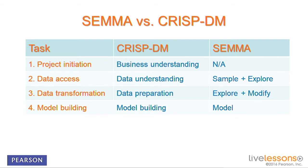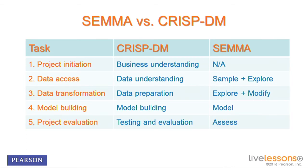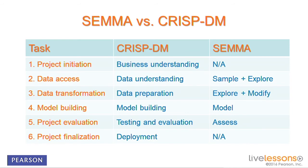The modeling phase is common to both — one calls it model building, the other simply model. For project evaluation, CRISP-DM specifically checks whether the outcome maps back to the business problem, whereas SEMA calls it assessment but assesses only the model, with no business-problem matching discussed. For project finalization, CRISP-DM has a deployment phase, while SEMA does not, because it assumes that if the model is assessed and found valuable, it will eventually be deployed as part of a computerized decision support system in the organization.